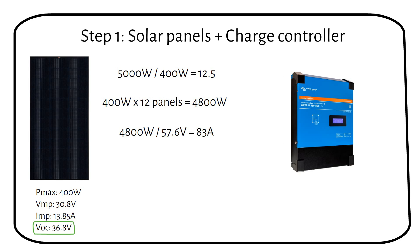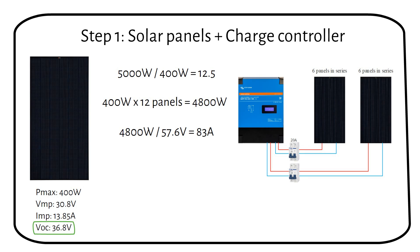Instead, split them into 2 groups of 6 panels each, connecting them to the charge controller's 2 MPPT inputs. Let's check the maximum input voltage. 6 panels times 36.8 VOC, times 1.25, which is a safety factor, equals 276 volts.